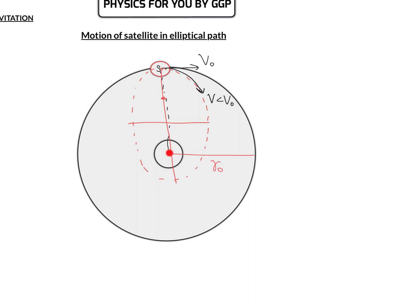Let's understand what we mean by farthest focus and nearest focus. For this elliptical path, we have a major axis, a minor axis, and two foci. With respect to the point where we changed the velocity, one focus is the nearest focus and the other is the farthest focus. So when velocity is less than orbital velocity, the center of the planet is at the farthest focus with respect to that point.